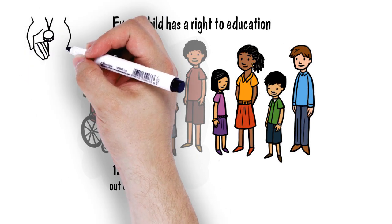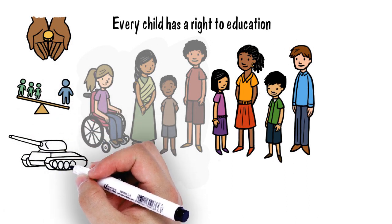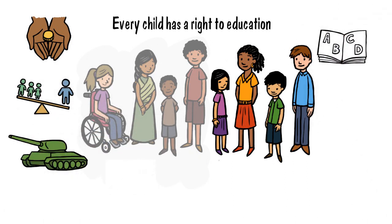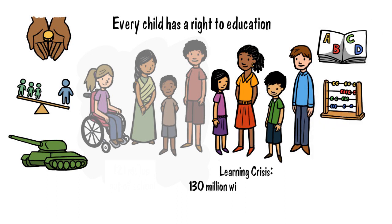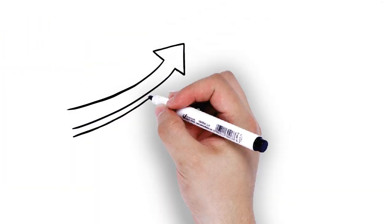And these children overwhelmingly come from the poorest and most marginalized parts of society. Even for those in school, the picture isn't much better. 130 million children don't have basic reading and numeracy skills by grade 4. We are in the middle of a learning crisis, and the challenge is growing.